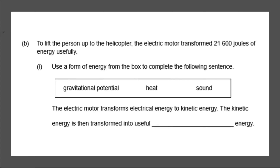Next question: to lift the person up to the helicopter, the electric motor transformed 21,600 joules of energy usefully. Use a form of energy from the box to complete the following sentence. The energy is transferred usefully, so the electric motor transforms electrical energy to kinetic energy — from one store to the other.